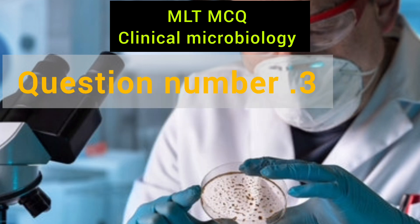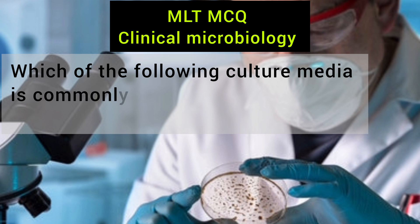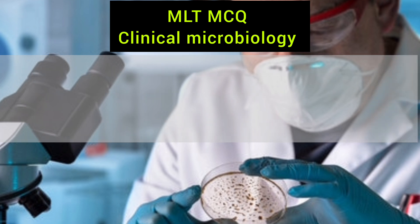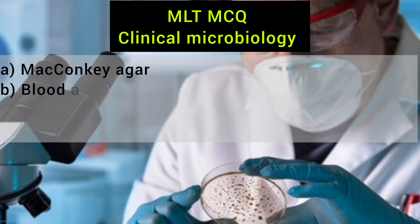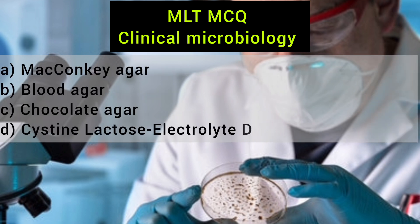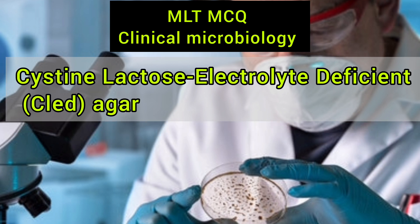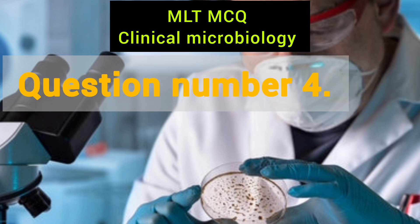Question number 3. Which of the following culture media is commonly used to isolate and identify urinary tract pathogens? a. MacConkey agar, b. Blood agar, c. Chocolate agar, d. Cysteine lactose electrolyte deficient (CLED) agar. The right answer is CLED agar.